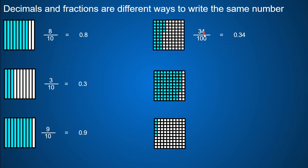And if I do 34 divided by 100 in the calculator, that's what I end up with. With this next one, there are 87 out of 100 shaded in. So that is 87 hundredths. And my decimal is going to say the same thing — 87 hundredths — because there's an 87 in the decimal places and it goes out to the hundredths place. So that's 0 and 87 hundredths.